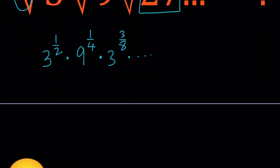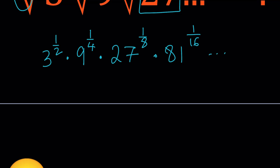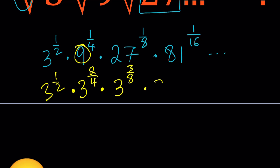We're going to have interesting powers. We can write 9 as 3 to the second power to the power 1/4, giving 3 to the power 2/4. Then 81 to the power 1/16 becomes 3 to the power 4/16, and so on. Do not simplify these fractions, because we want to see the pattern. The exponents are: 1/2, 2/4, 3/8, 4/16, 5/32 — the numerators are consecutive integers, and the denominators are powers of 2. The bases are all powers of 3.